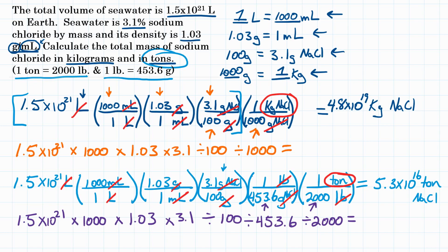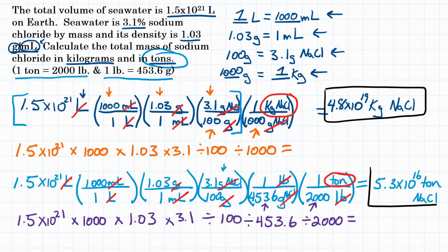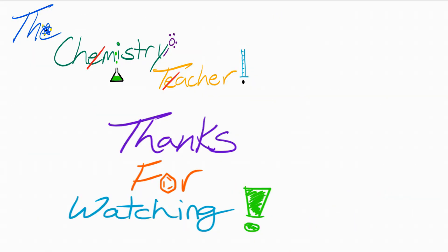So the final answer: what is the mass of sodium chloride in all of Earth's seawater? In kilograms, that's 4.8 times 10 to the 19th. In tons, that's 5.3 times 10 to the 16th. If you want to see another example, click in the top right. Please like this video if it helped you, check the description for additional resources, subscribe and ring the bell, and thank you so much for watching — we'll see you next time.